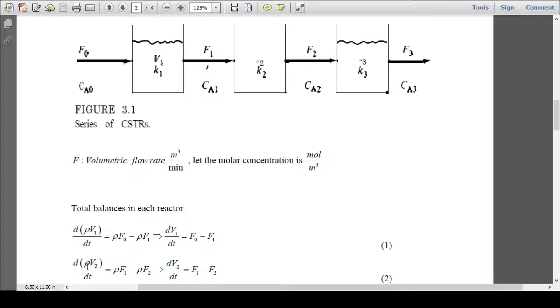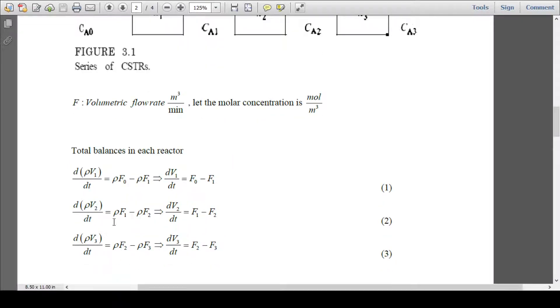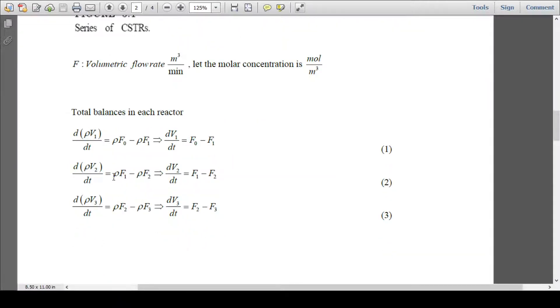Same way we can write for reactor 2: dV2/dt equals F1 minus F2. Then for reactor 3: dV3/dt equals F2 minus F3.